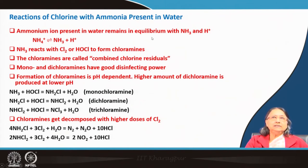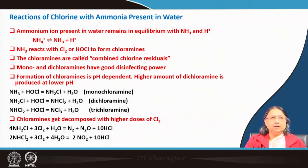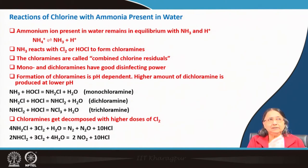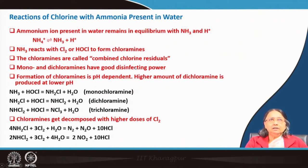Ammonium ion present in water remains in equilibrium with ammonia and H⁺. NH₃ reacts with chlorine or HOCl to form chloramines. The chloramines are called combined chlorine residuals, whereas HOCl, OCl⁻, and Cl₂ are called free chlorine residuals. Mono- and dichloramines also have good disinfecting properties, but not as good as free chlorine residuals — they are weaker, but still have disinfecting power.